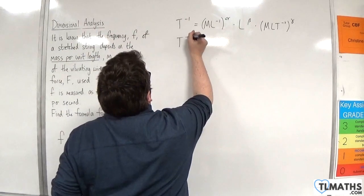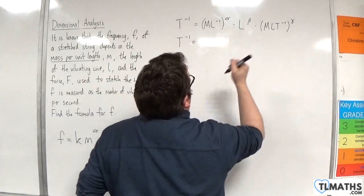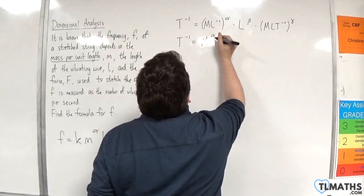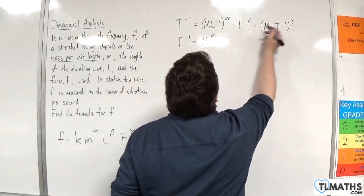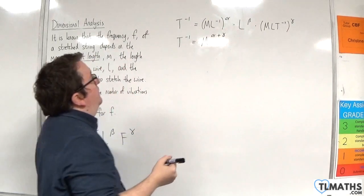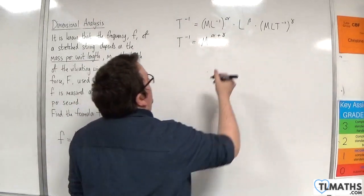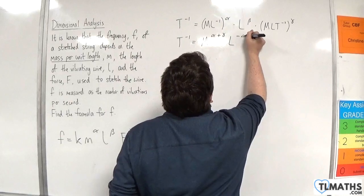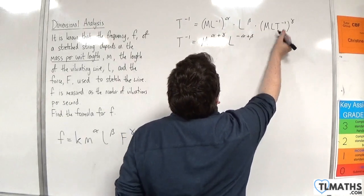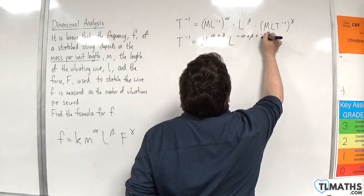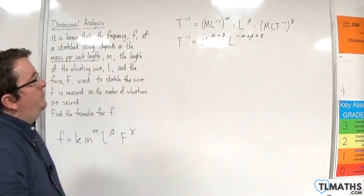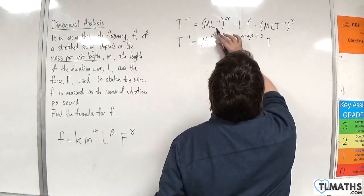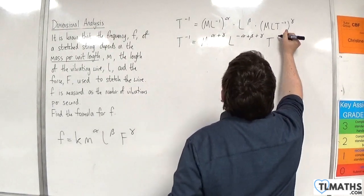So we have t to the minus one is equal to... Now the masses, we have m to the alpha times by m to the gamma, so alpha plus gamma in the index. Then we have l minus one times alpha, so minus alpha plus beta plus gamma when you multiply it out. Then we've got t, and the only t is over here, so minus two gamma.